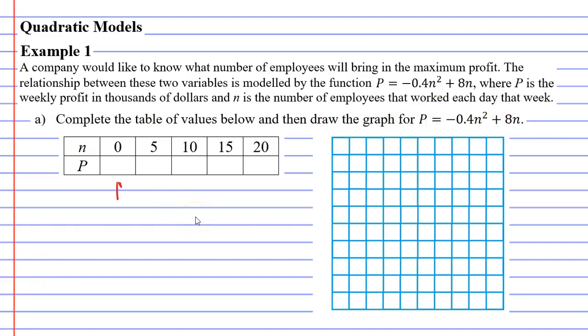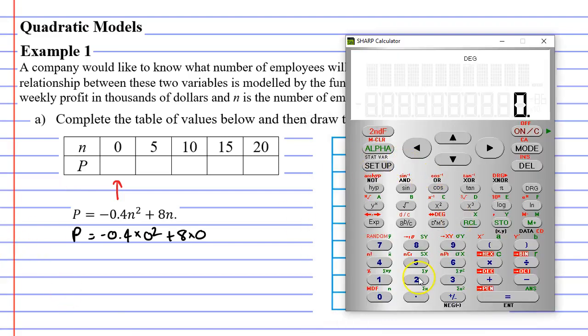So we'll start at the very first column here where n equals 0. And we'll bring down our equation and we'll substitute 0 in place of n. So P equals negative 0.4 times n squared or 0 squared plus 8n or 8 times 0. Now when we bring up our calculator we're going to go negative 0.4 times 0 squared plus 8 times 0 and this comes out to equal 0. So P equals 0 on our table of values.